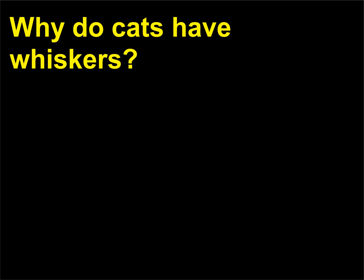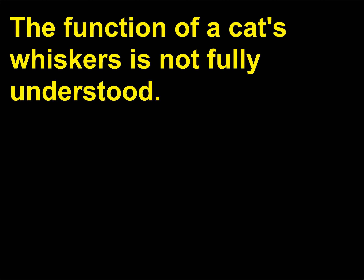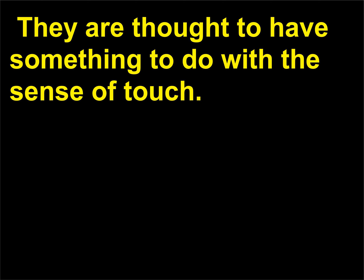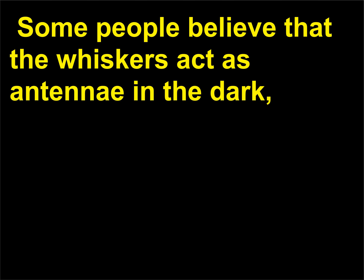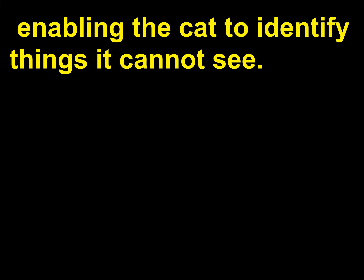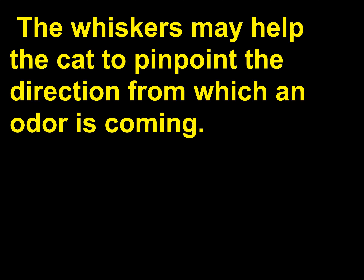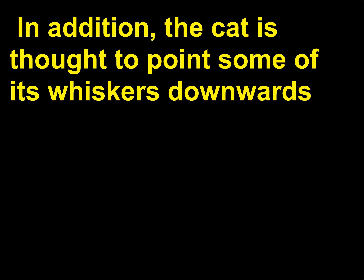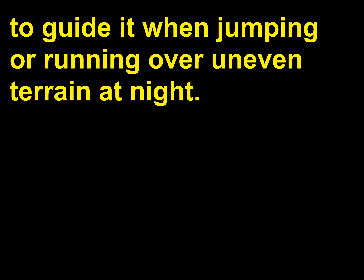Why do cats have whiskers? The function of a cat's whiskers is not fully understood. They are thought to have something to do with the sense of touch. Removing them can disturb a cat for some time. Some people believe that the whiskers act as antennae in the dark, enabling the cat to identify things it cannot see. The whiskers may help the cat to pinpoint the direction from which an odor is coming. In addition, the cat is thought to point some of its whiskers downwards to guide it when jumping or running over uneven terrain at night.